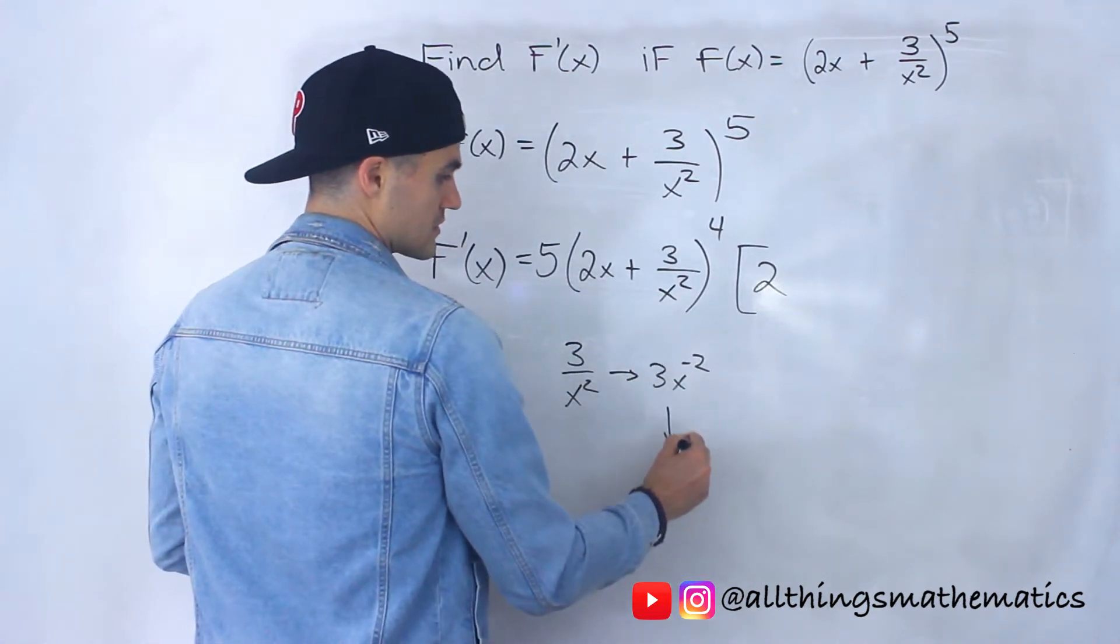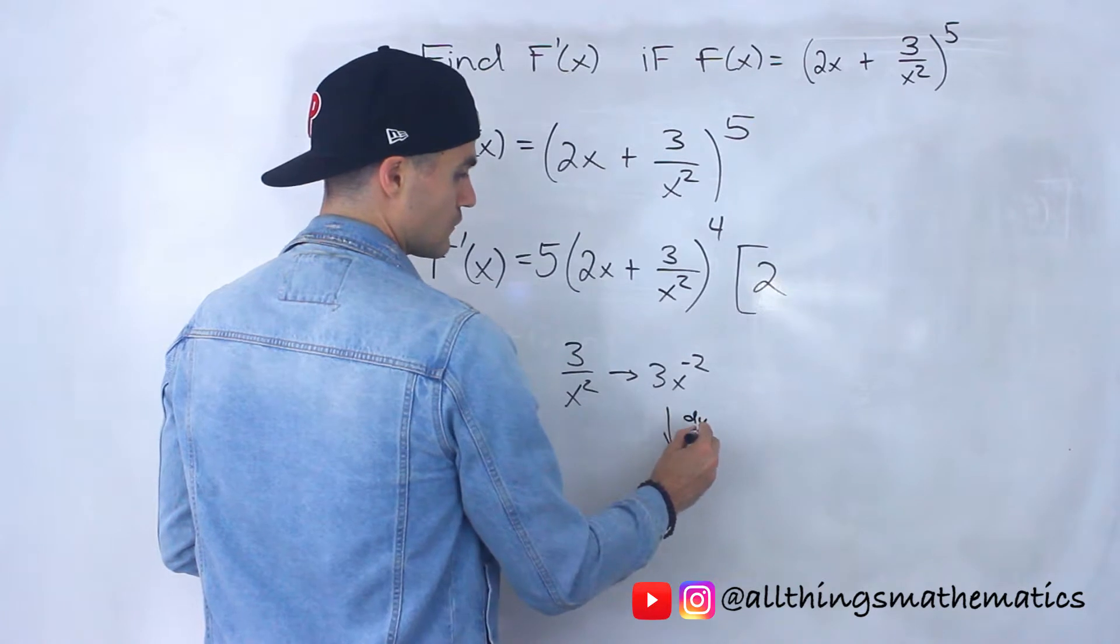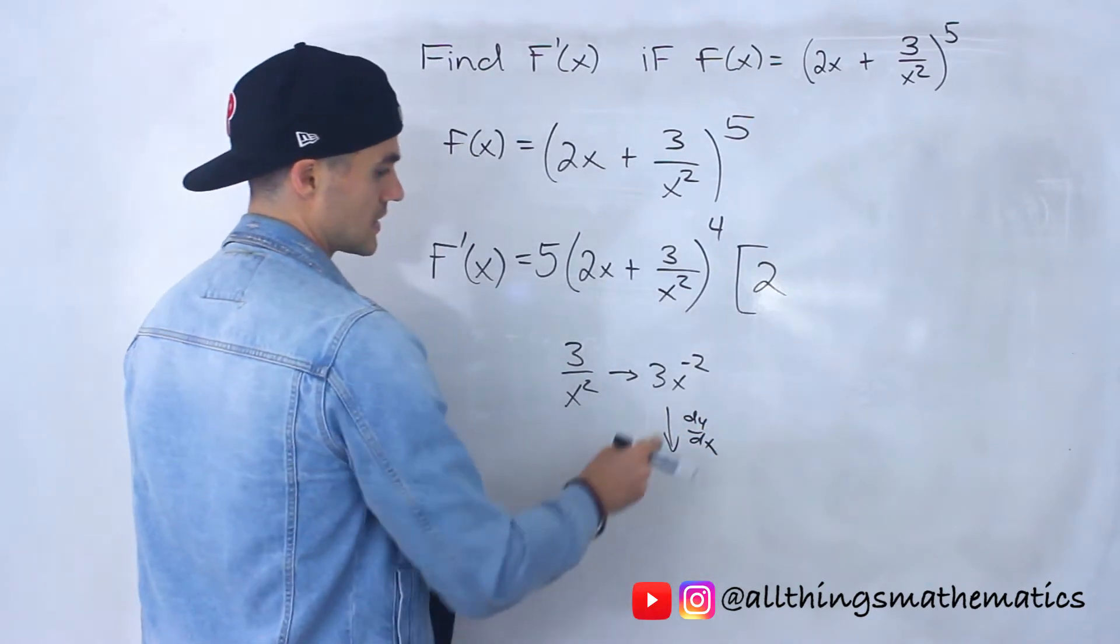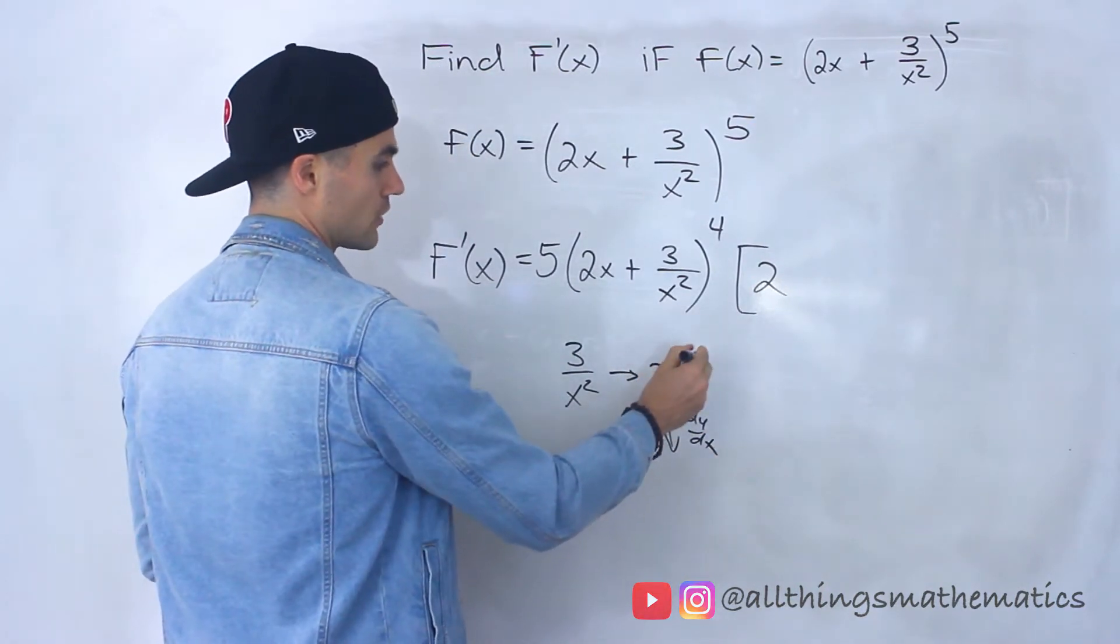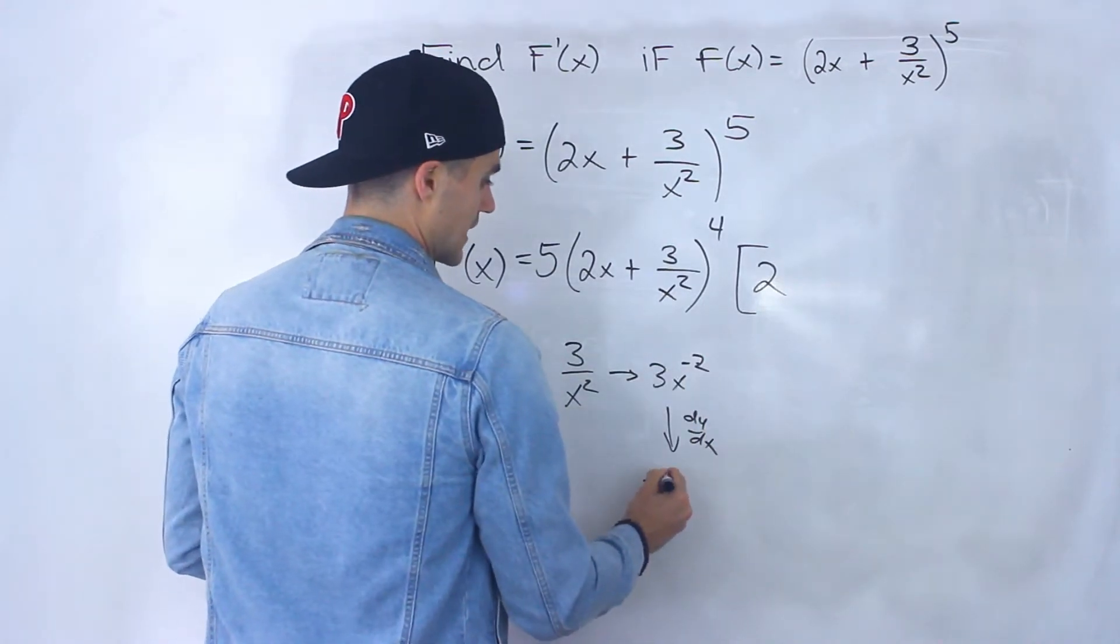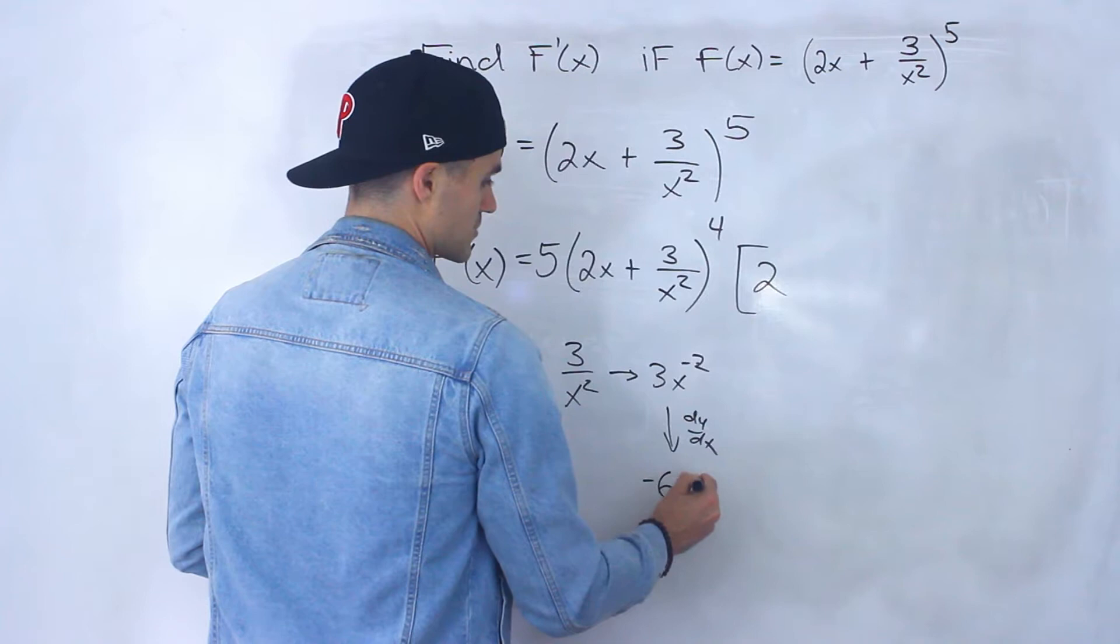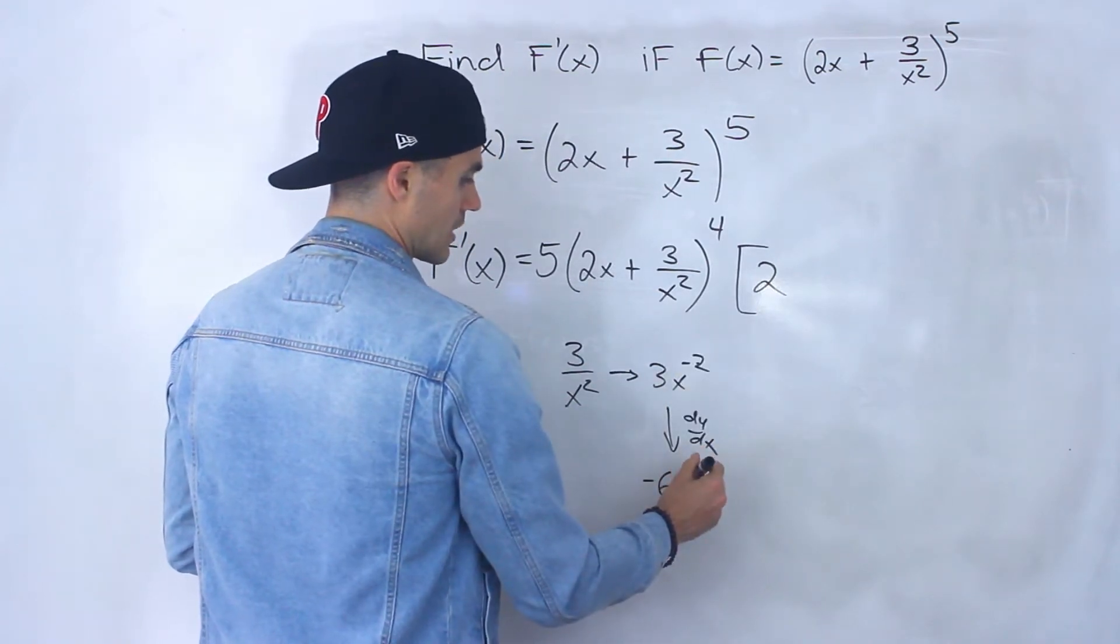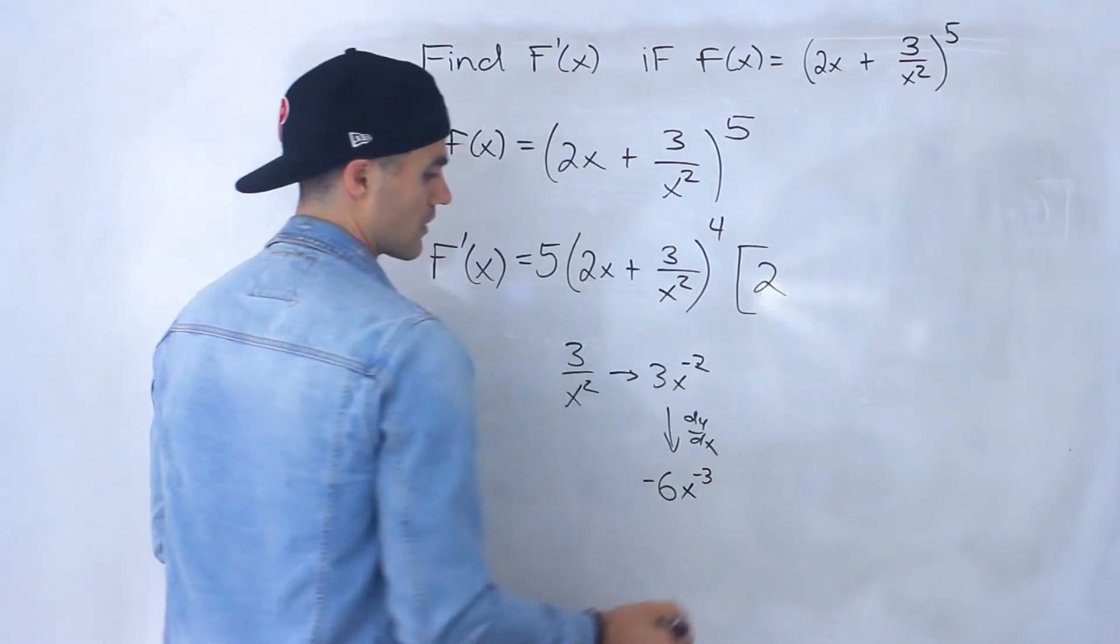And then to find the derivative of it, we can just apply the power rule here. So we could bring the negative 2 down. Negative 2 times 3 is negative 6. And then we subtract 1 from the exponent. So we'd end up having x to the negative 3 there.